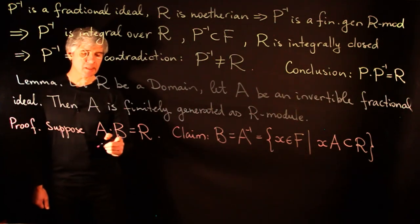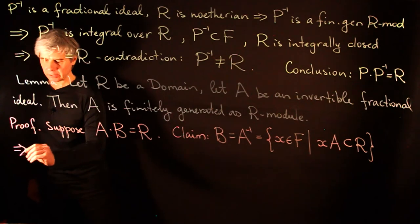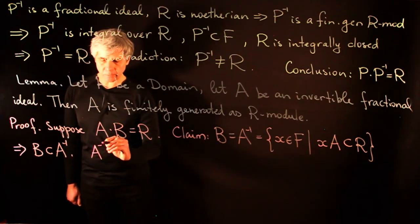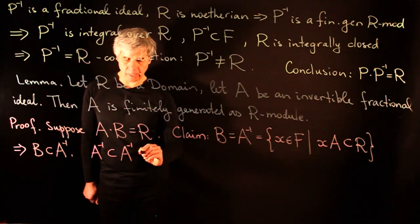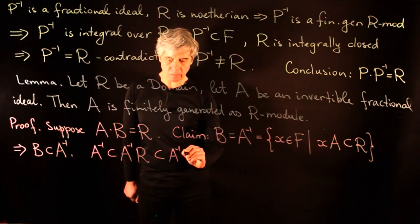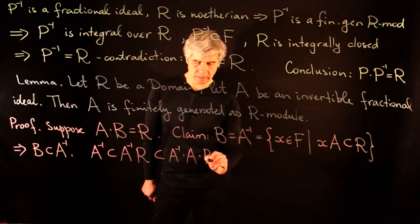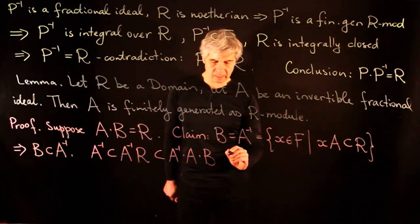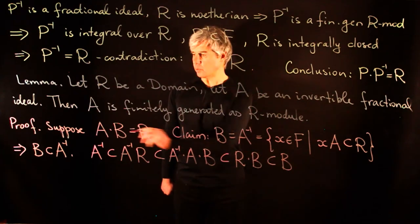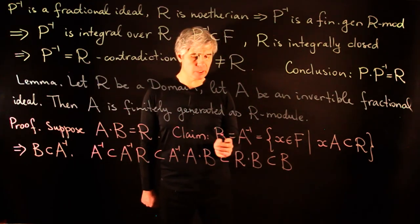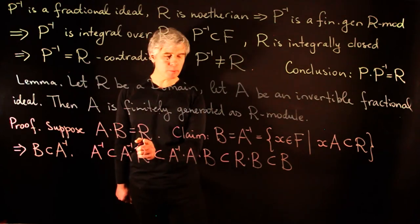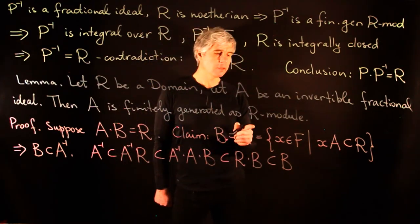Indeed, since A·B = R, this implies B ⊆ A⁻¹. Also, A⁻¹ ⊆ A⁻¹·R = A⁻¹·(A·B) ⊆ (A⁻¹·A)·B ⊆ R·B = B. So we proved both inclusions, establishing B = A⁻¹. This is a useful fact: if a fractional ideal is invertible, then its inverse is given by the A⁻¹ construction.